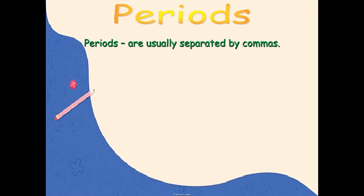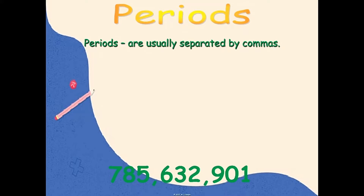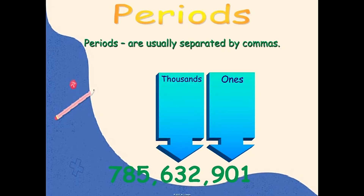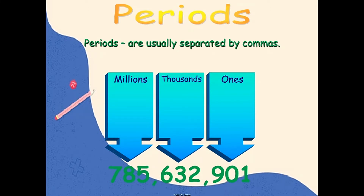Periods. Periods are usually separated by commas. We will be using the number 785,000,632,901. The reason why it is separated by commas is because each 3 digits belong to 1 period. Our first period is what we call ones, our second period is thousands, and our third period is millions.